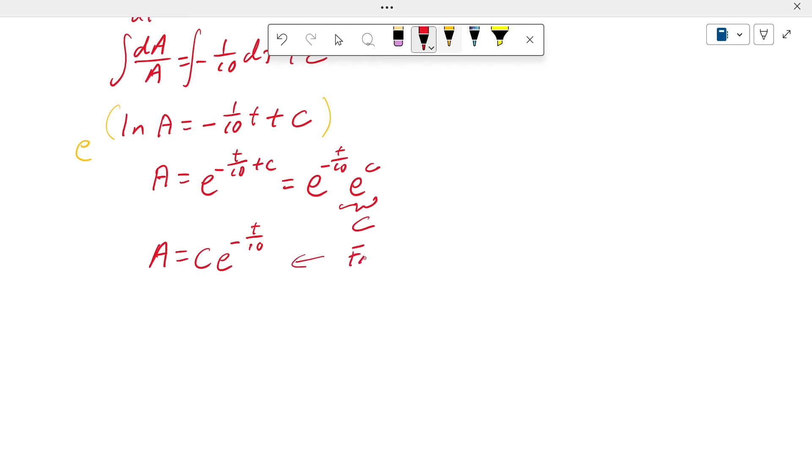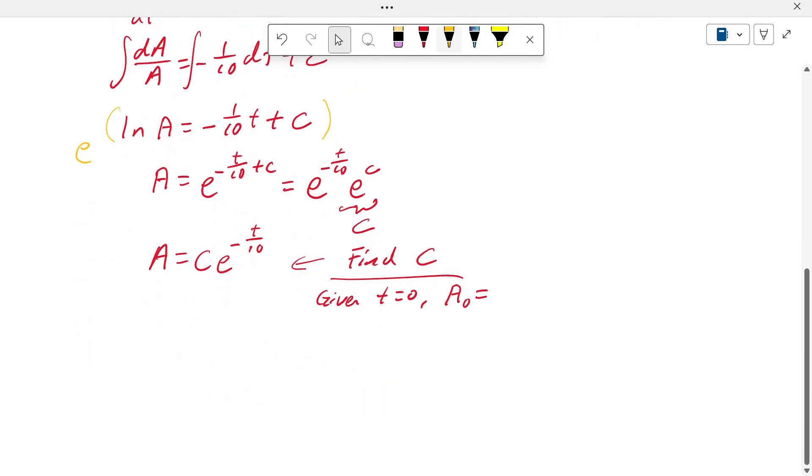The C value we use from the given initial conditions. Given at T equal to 0, the initial salt in the tank in our case here is 10 kg.